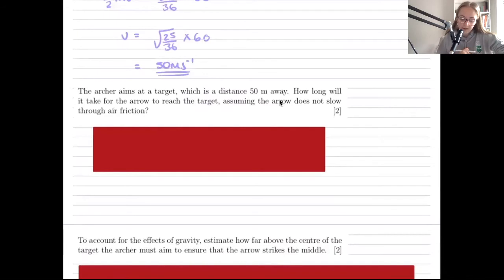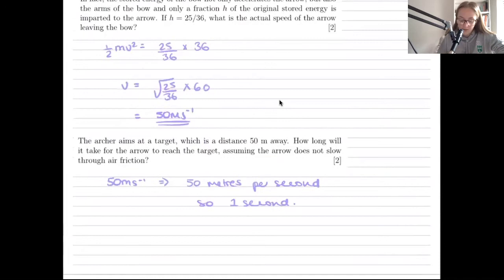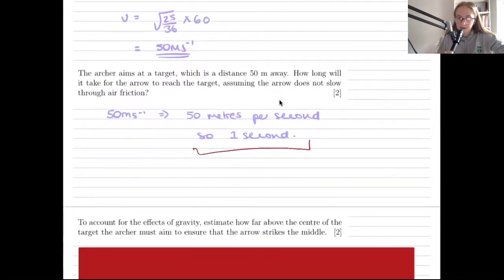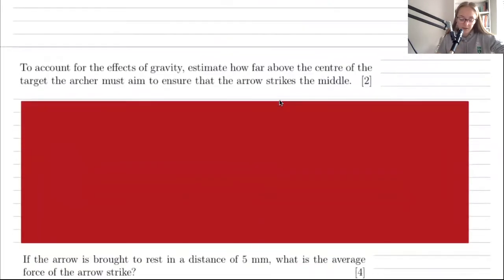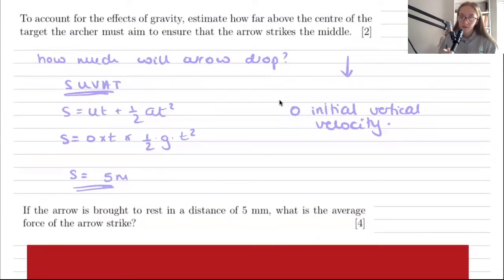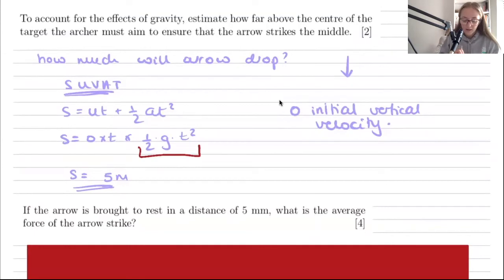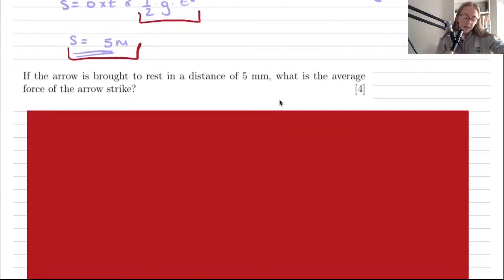The archer aims at a target 50 m away. Travelling at 50 m/s, the arrow takes 1 second to reach the target. To account for gravity, using s = ut + half·a·t² with zero initial vertical velocity and t = 1 s gives a vertical drop of 5 m, so the archer must aim 5 m above the centre of the target.